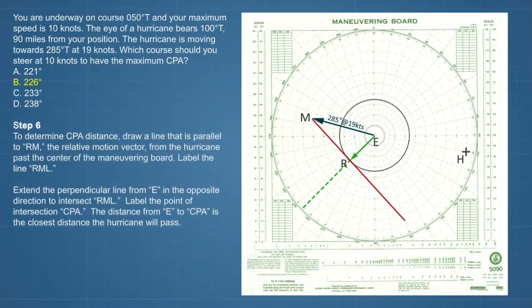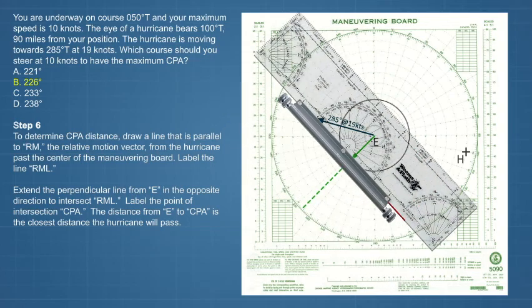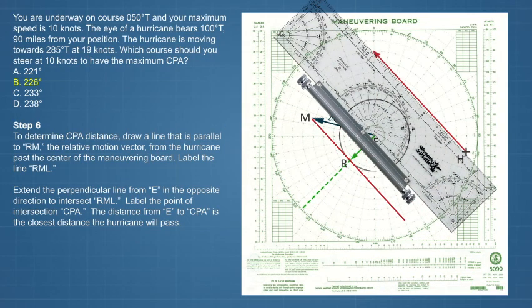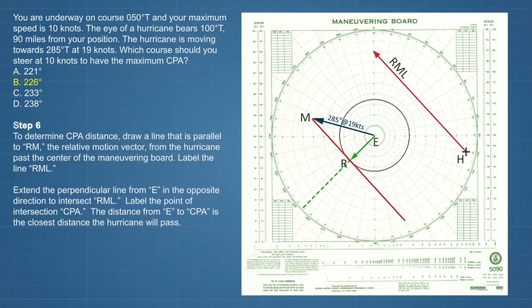To determine CPA distance, draw a line that is parallel to RM, the relative motion vector, from the hurricane past the center of the maneuvering board. This is the relative motion line the hurricane will follow. Label the line RML. Next, extend the perpendicular line from E in the opposite direction to intersect RML. Label the point of intersection CPA. The distance from E to CPA, or 54 nautical miles, is the closest distance the hurricane will pass.